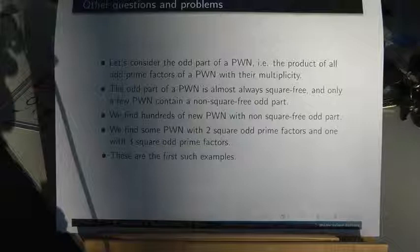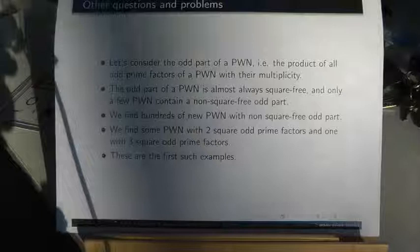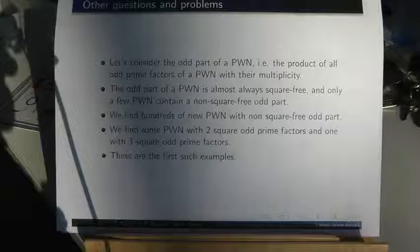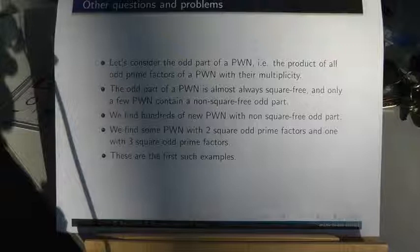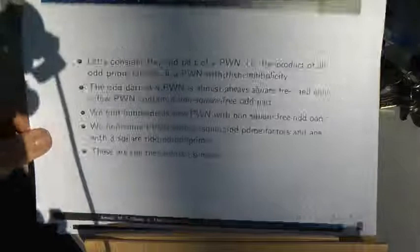We find hundreds of new primitive weird numbers with non-square-free odd parts. We find some primitive weird numbers with two squared odd prime factors and one even with three squared odd prime factors. These are the first such examples.